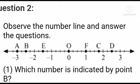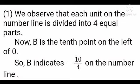Observe the number line and answer the questions. Question 1: Which number is indicated by point B? We observe that each unit on the number line is divided into 4 equal parts. Now, B is the 10th point on the left of 0. Numbers to the left of 0 are negative numbers, so B indicates -10/4 on the number line.